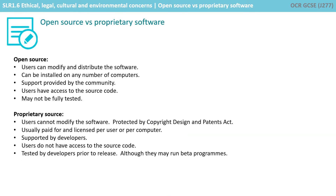Today, copyright laws have given us two main types of distributed software. Open source, which users can freely distribute, can install on any number of computers, and users have access to the source code to further modify and develop the software.